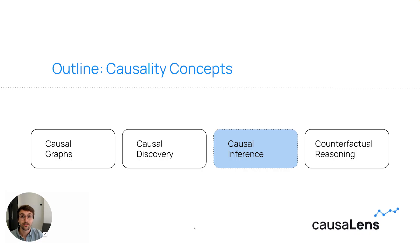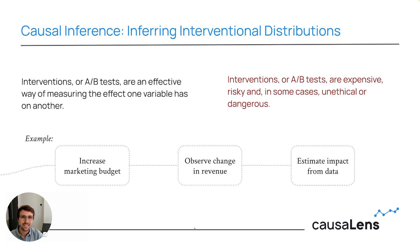I'd like to talk about causal inference, which is perhaps the most practical aspect of causality. The main idea of causal inference is to infer interventional distributions from observational data. The main reason we want to do that is that interventions, or A-B tests, are an extremely effective way of measuring the effect one variable has on another.